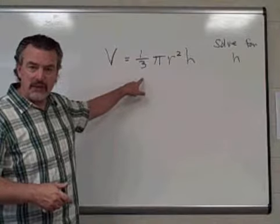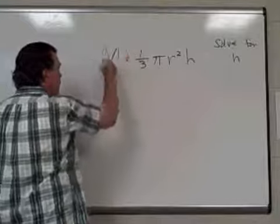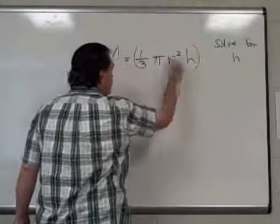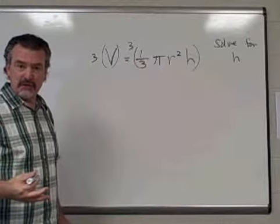Well, once again, my equation has a fraction, so I'm going to start by eliminating that fraction, and that will be done by multiplying both sides of the equation by 3.